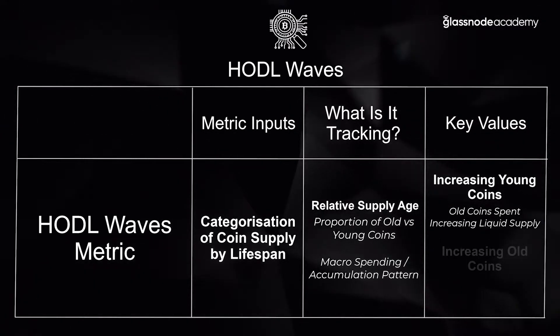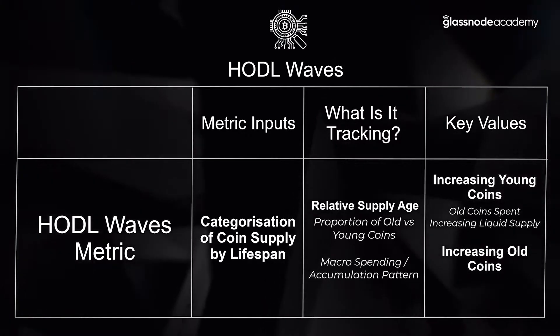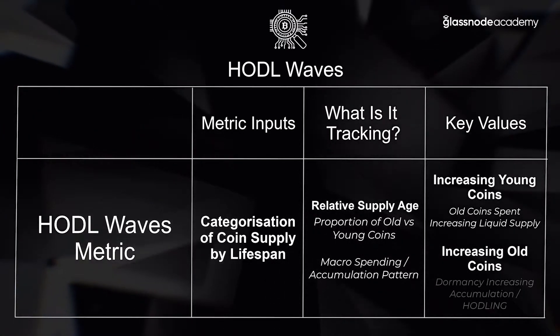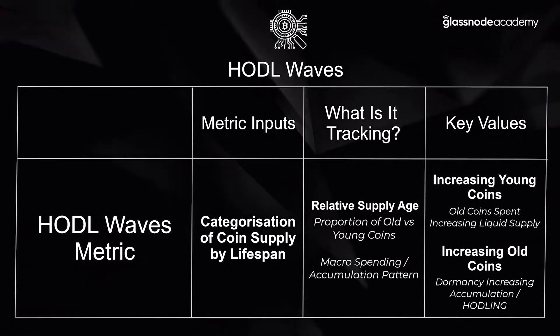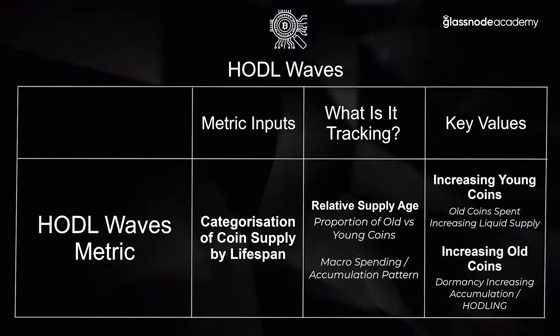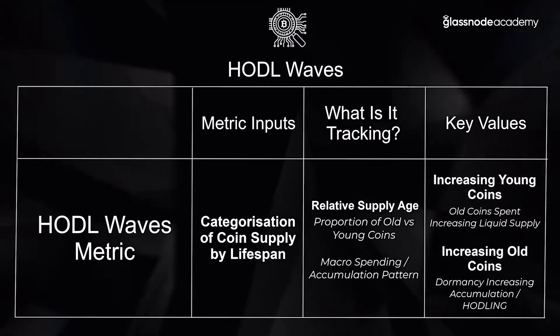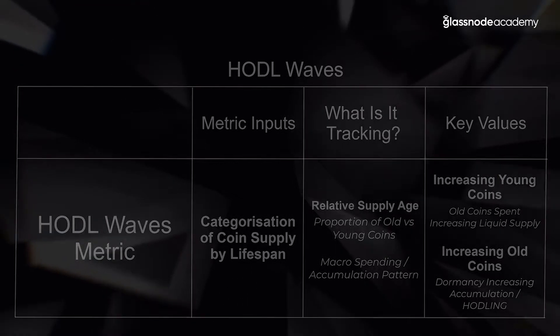Conversely, when we're seeing the older age bands expanding, we're seeing dormancy increasing. There's an accumulation or HODLing going on as young coins mature into older coins. Let's now jump into Glassnode Studio and have a look at HODL waves in practice.